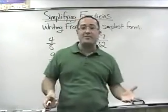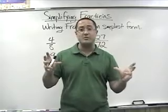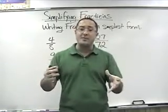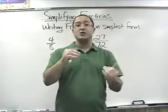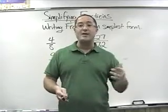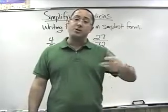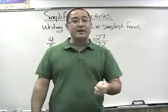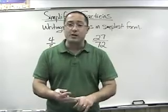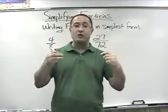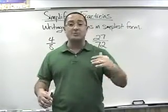Now let's talk about simplifying fractions. When you simplify a fraction, you're writing it in simplest form. Remember there's more than one way to give the same information with different numbers — the simplest form uses the smallest numbers possible. The way we simplify a fraction is to divide both parts of the fraction by the same number. You have to divide — you can't do it by adding, subtracting, or multiplying.